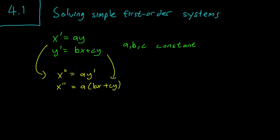So what we end up with is x'' = abx + acy. However, we also know that ay = x' from the first equation.